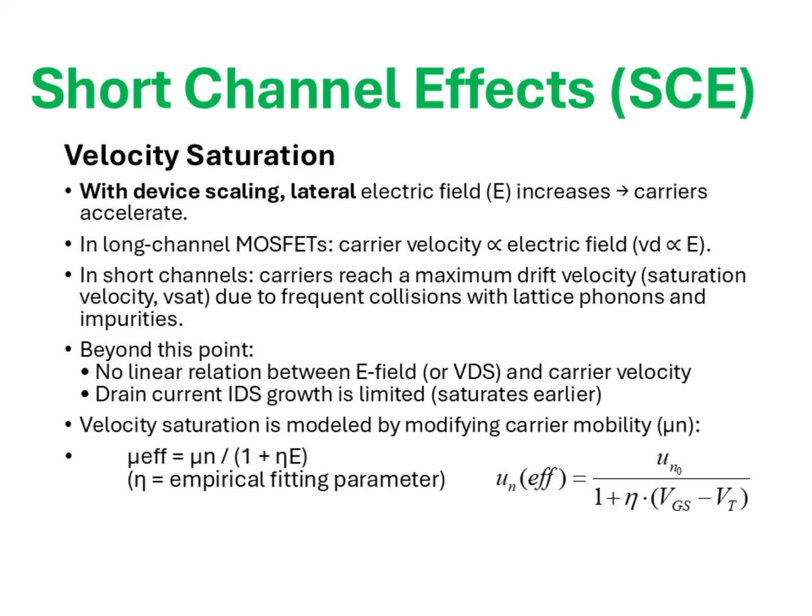In long channel devices, we assume that the carrier drift velocity is linearly dependent on the electric field, which is the basis of the classical current-voltage equations. However, in short channel devices, this assumption no longer holds. Beyond a certain field strength, electrons collide more frequently with phonons, impurities, and other carriers. These scattering events prevent carriers from gaining indefinite acceleration. As a result, the carrier velocity reaches a limiting value, referred to as the saturation velocity VSAT. At this point, the relationship between the applied field and carrier velocity becomes non-linear, and increasing the drain-to-source voltage further does not proportionally increase the current.